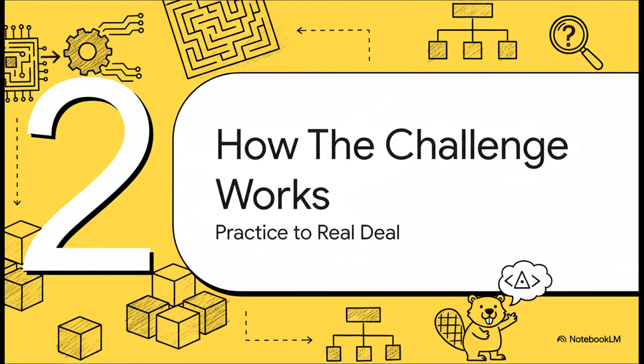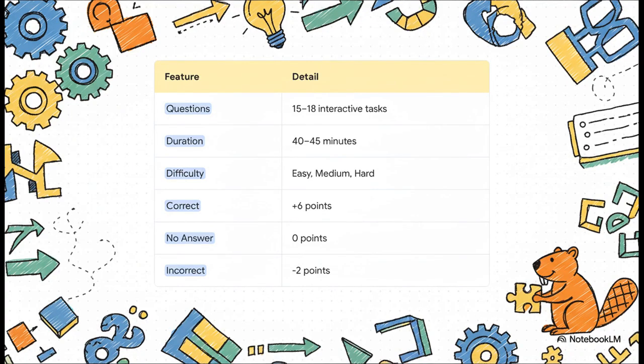Okay, so now that we know why this challenge exists, let's get into the nitty-gritty of how it actually works. Like, what does it look like for a student who's about to take the test? So if we look at the UK secondary school version, students get somewhere between 15 and 18 interactive tasks, and they have about 45 minutes to do them. The questions are split into easy, medium, and hard. But the scoring is what's really interesting.